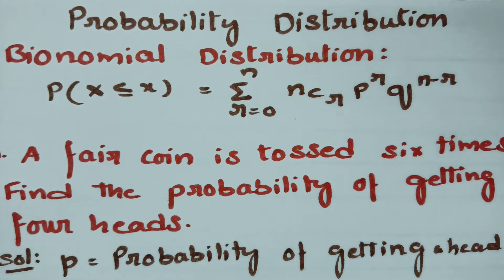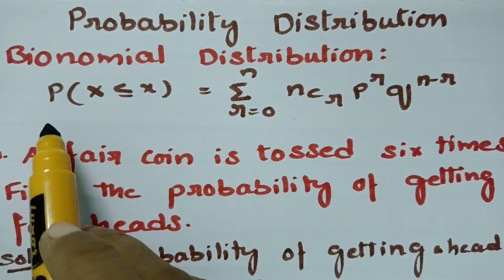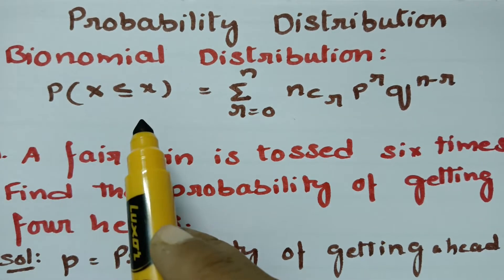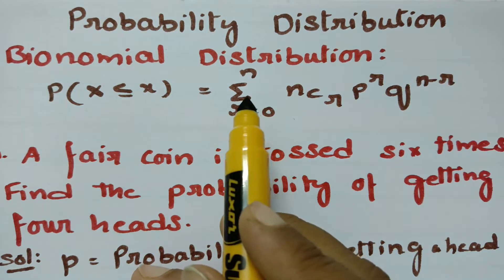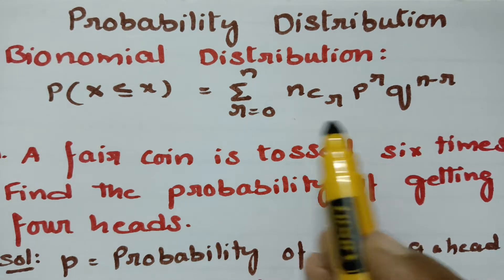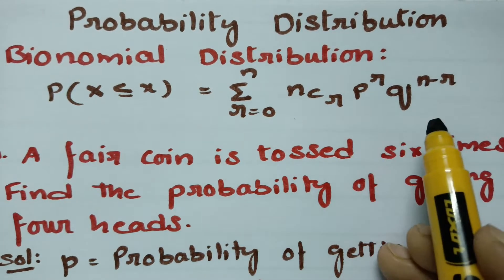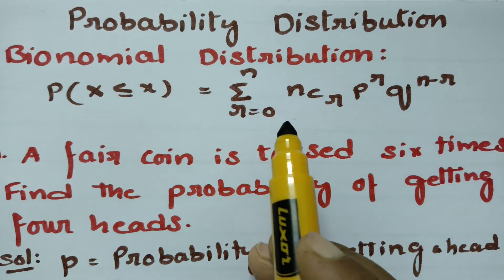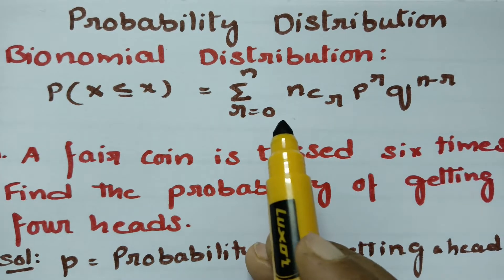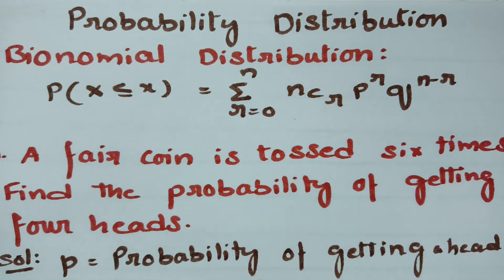Today's video is on binomial distribution. This topic is from probability distribution and the formula is very clear here: the probability of X less than or equal to small x is equal to sigma, r equals 0 to n, of nCr × p^r × q^(n−r). Using this formula, we are going to solve a problem.